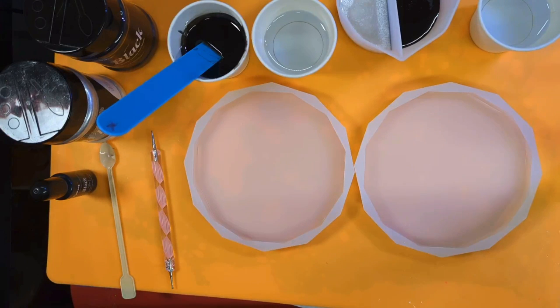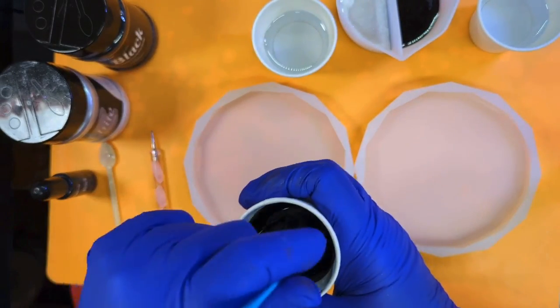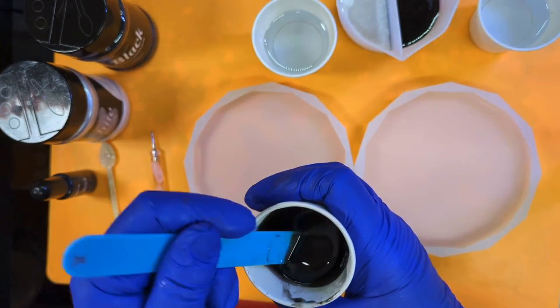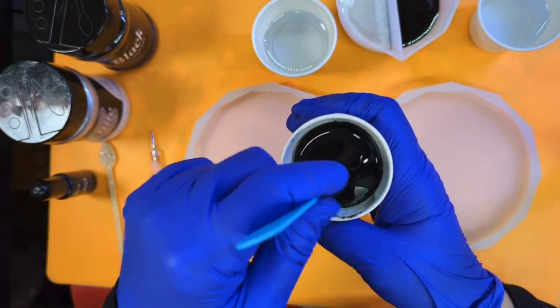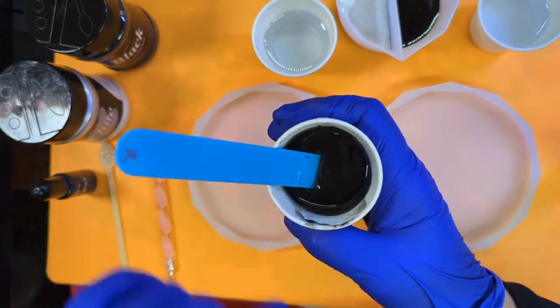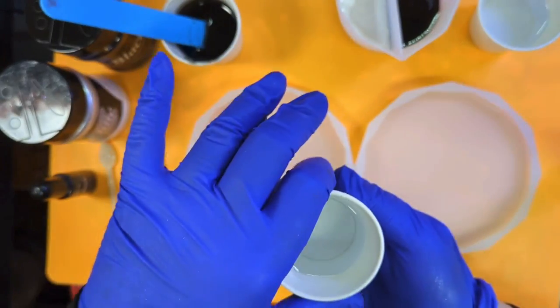So I decanted 36 and I did - I think I added too many - I did eight drops of pigment so it's quite dark and that was just black pigment, pigment tint. Then I decanted 36 of clear one.